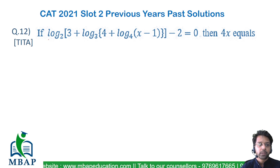Read the question well. The question says if log base 2 of [3 + log base 3 of (4 + log base 4 of (x - 1))] - 2 = 0, then find 4x.